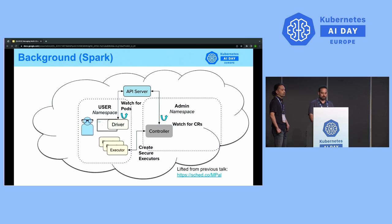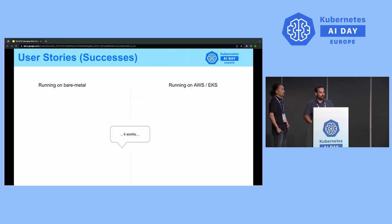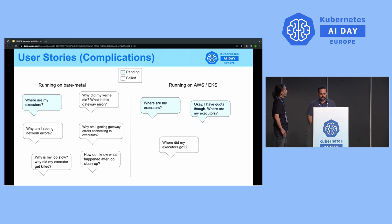We've been running our personal fork of Spark in a managed data science platform across bare metal and various clouds for some time. Let's walk through user studies addressing the complications that arose. There are two categories of issues: ones relating to the pending status of executors, and others relating to failed states.